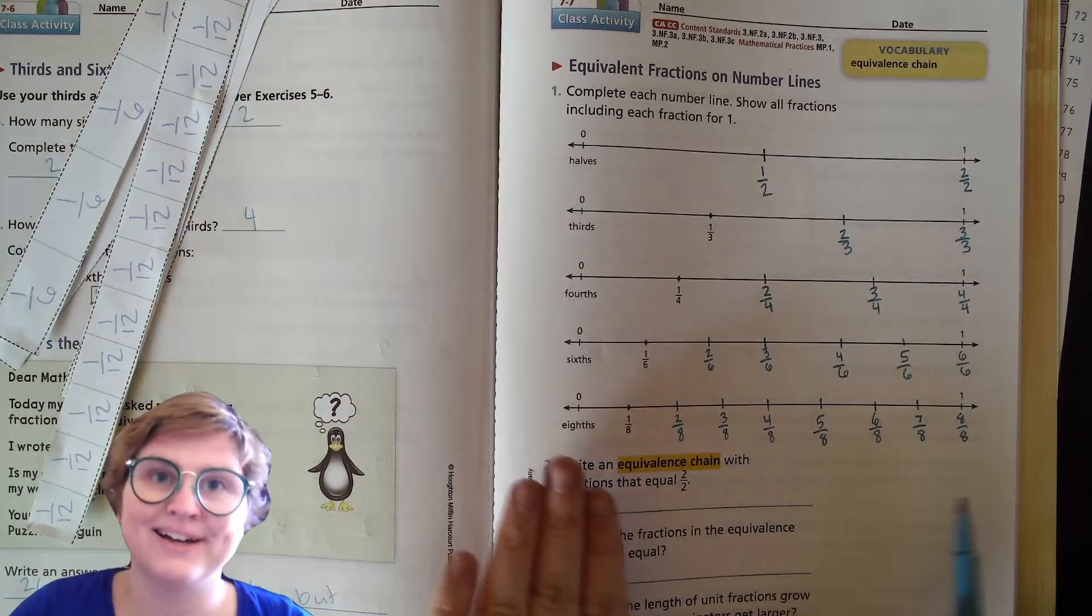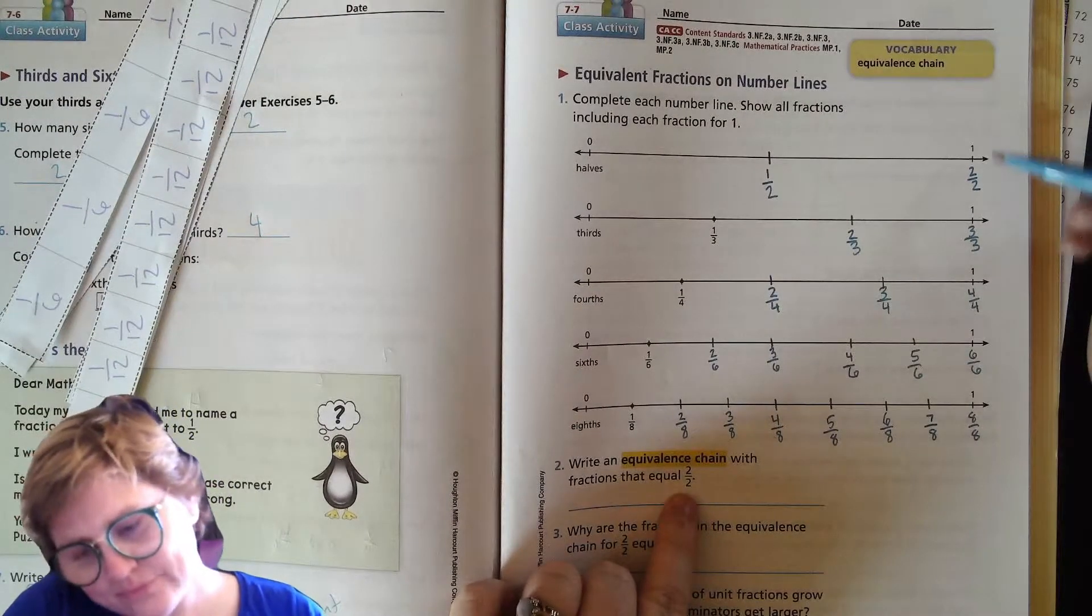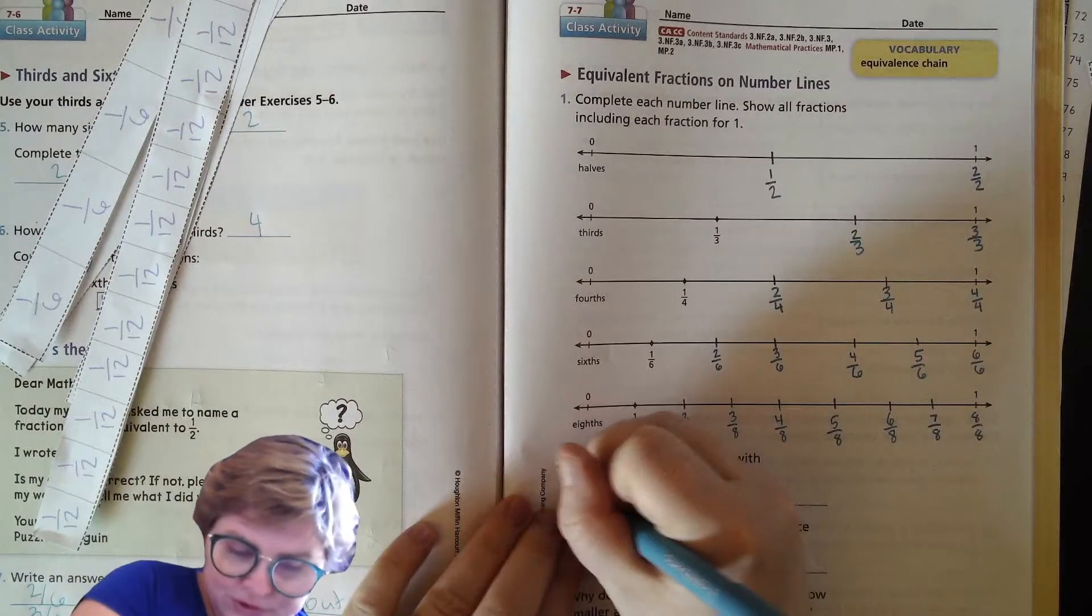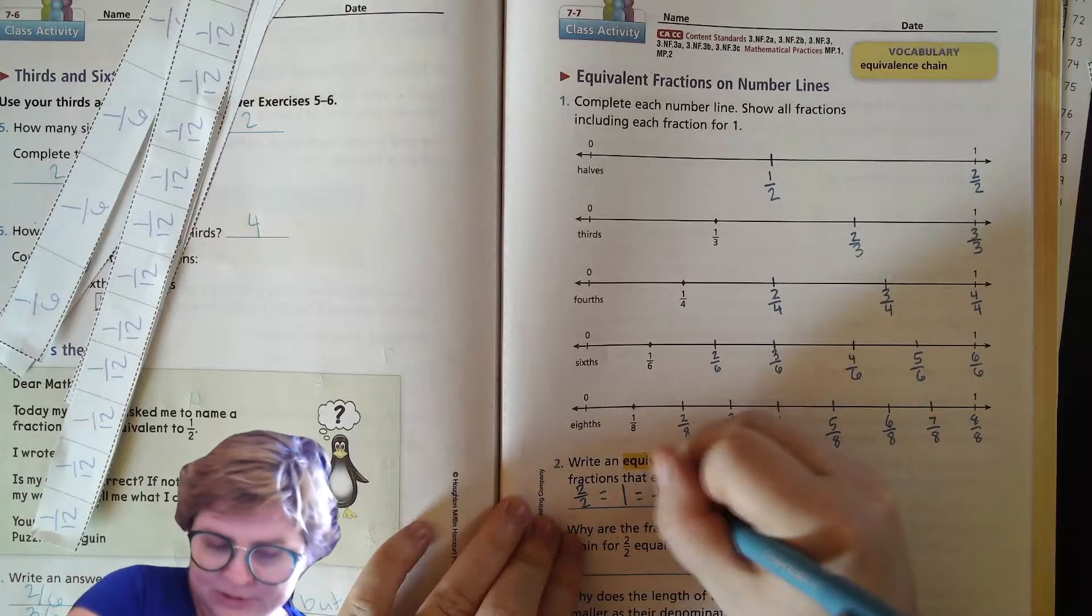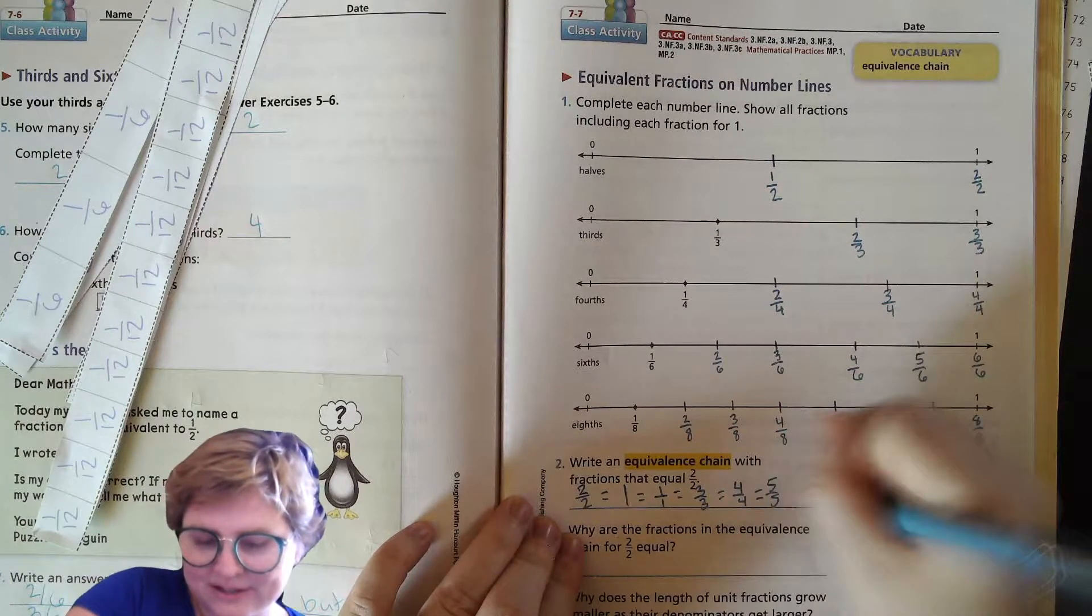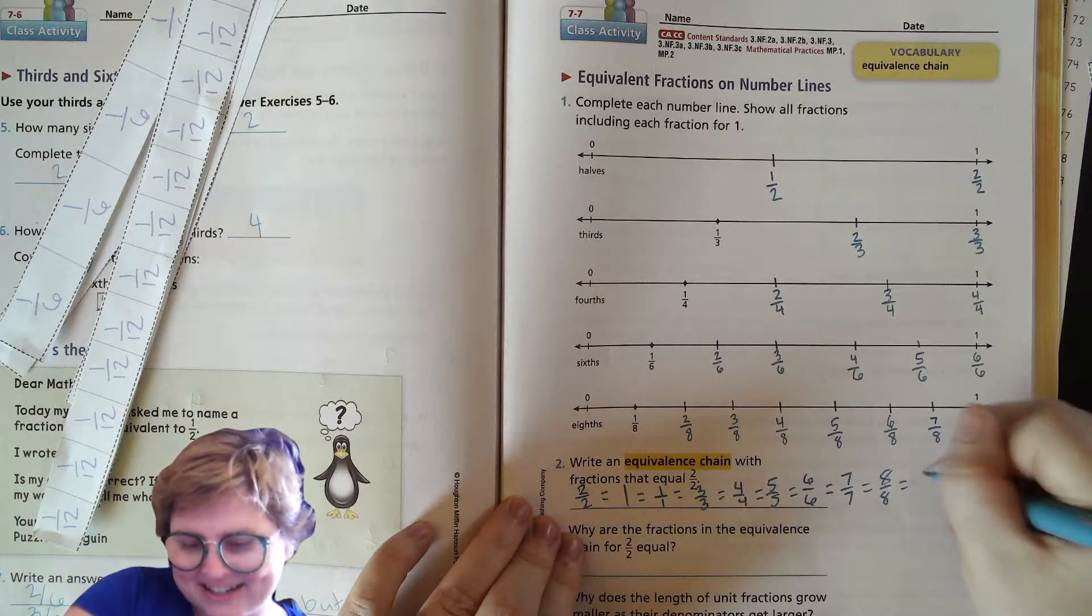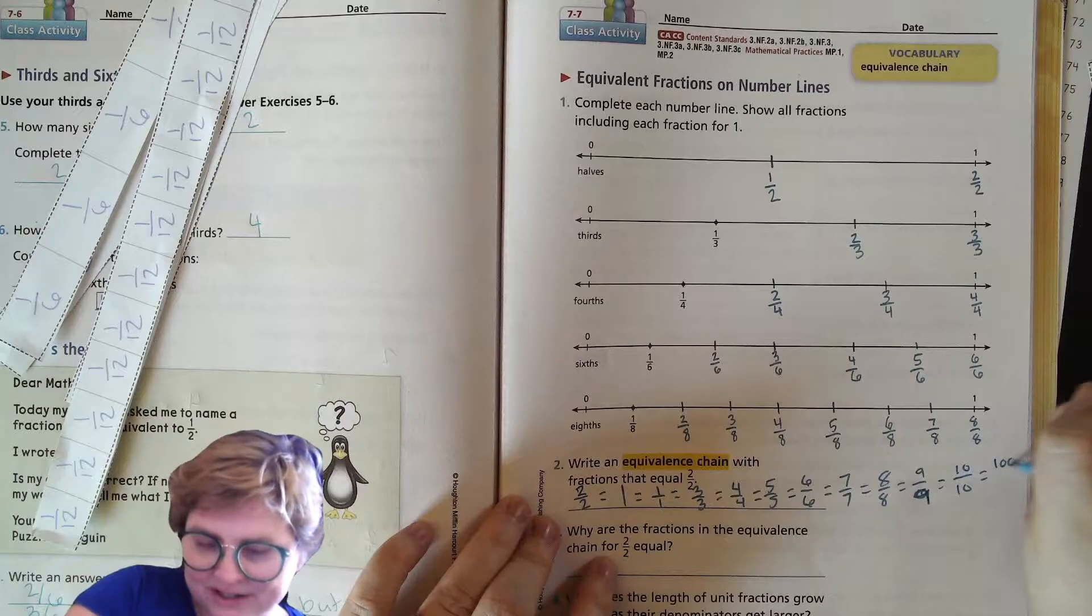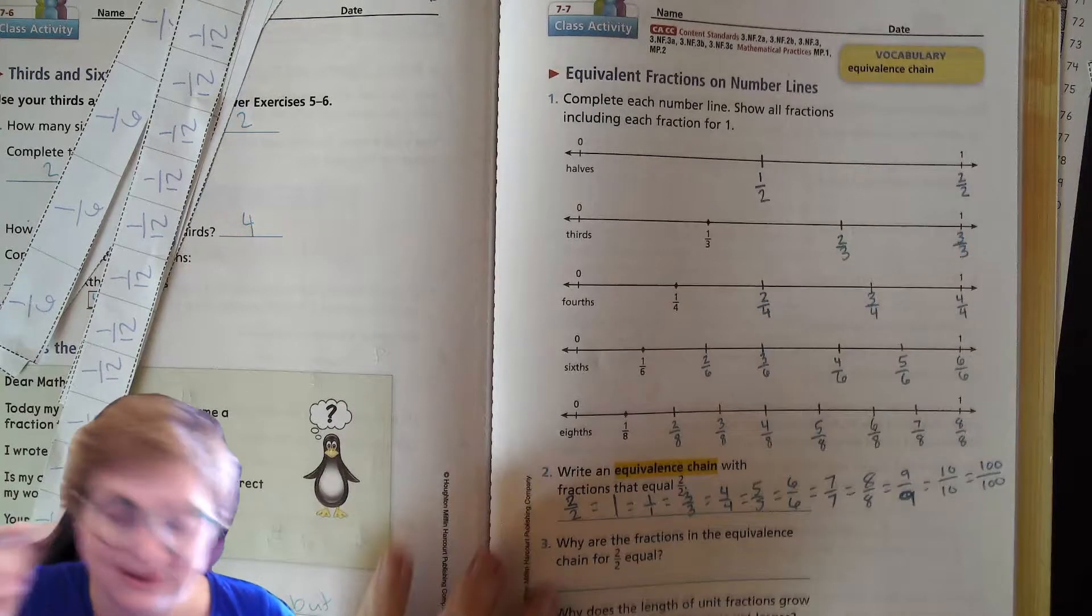So now we're going to write an equivalence chain with fractions that equal two halves. So an equivalence chain is just a bunch of equal signs with equivalent values in between. So two halves equals one, which equals one over one, which equals three over three, which also equals four over four, which also equals five over five, equals six over six, which equals seven over seven and eight over eight and nine over nine, and ten over ten, and a hundred over a hundred, and all numbers over themselves. That's a whole, that's the whole thing.